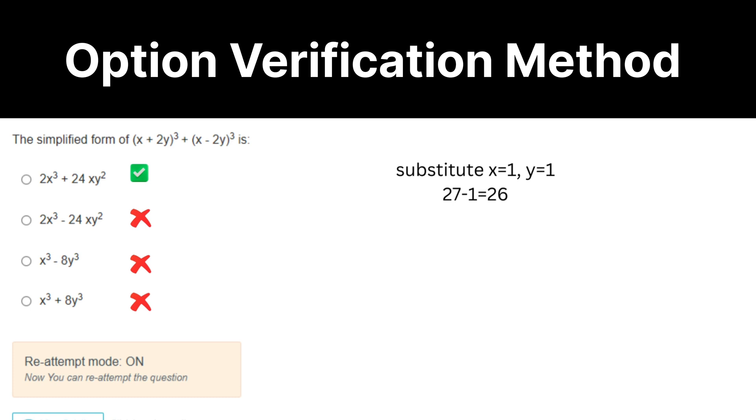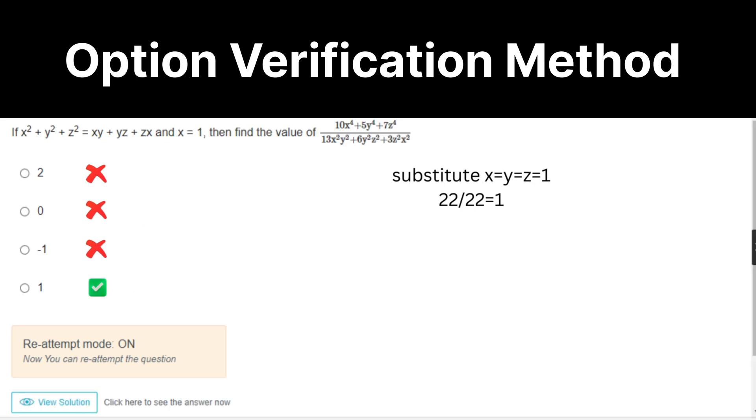Again, algebra. Substitute x equal to 1, y equal to 1. You will get 26. 2 plus 24 equal to 26. That's it. Again, put x equal to y equal to z equal to 1. It is satisfying the condition. So 10 plus 5 plus 7, 22 by 13 plus 6 plus 3, 22. Which equal to 1.